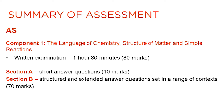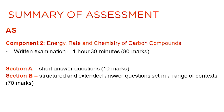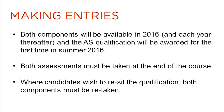Component 1 is an 80 mark paper completed in 1 hour and 30 minutes. It is based on the content of the Language of Chemistry, Structure of Matter and Simple Reactions section. Component 2 is another 80 mark paper completed in 1 hour and 30 minutes. It is based on the content of the Energy, Rate and Chemistry of Carbon Compounds section. Both components will be available for the first time in summer 2016 and the AS qualification will be awarded for the first time in summer 2016. This is a linear qualification so both units must be taken at the end of the course. If candidates wish to re-sit the qualification, both components will have to be re-taken.